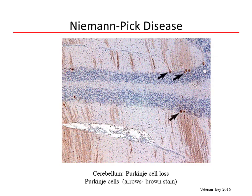Niemann-Pick disease is a lysosomal storage disease associated with a reduction or loss of acid sphingomyelinase activity. In Niemann-Pick type A disease, there is a loss in the ability to convert sphingomyelin into ceramide lipids. In contrast, type C Niemann-Pick disease is associated with dysregulation of cholesterol movement within the cell and subsequent intracellular accumulation of cholesterol. Purkinje cells are important cells located within the layers of the cerebellar cortex involved in the regulation of motor movement. In this histomicrograph, the Purkinje cells are seen as brown-stained cells. Notice the relative paucity in their number — this dropout will lead to discoordination of movement in animals, a common clinical manifestation of Niemann-Pick disease.